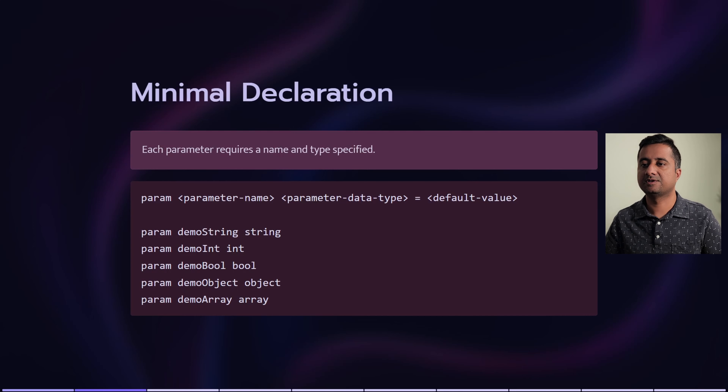Parameters have minimal declaration. You just have to mention the name and what type it is, and you can specify the value. That way we can reuse parameters across the template.